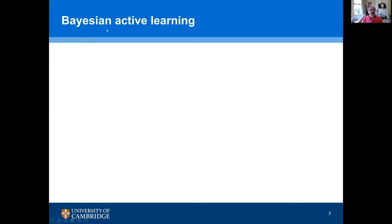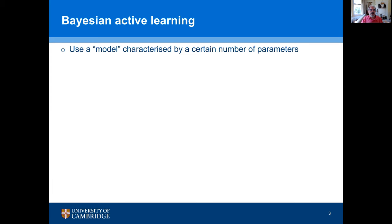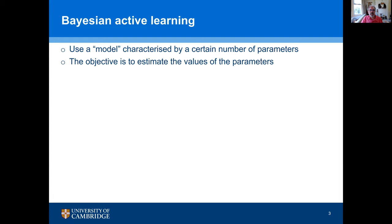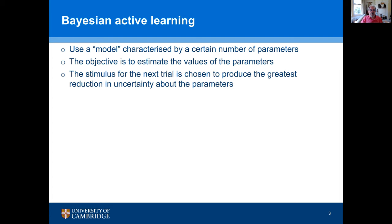I want to talk about a method called Bayesian active learning, also called machine learning, which can be used to do hearing tests more efficiently. With Bayesian active learning you use a model characterized by a certain number of parameters, and the objective is to estimate the values of those parameters. The stimulus for the next trial is chosen to produce the greatest reduction in uncertainty about the parameters.